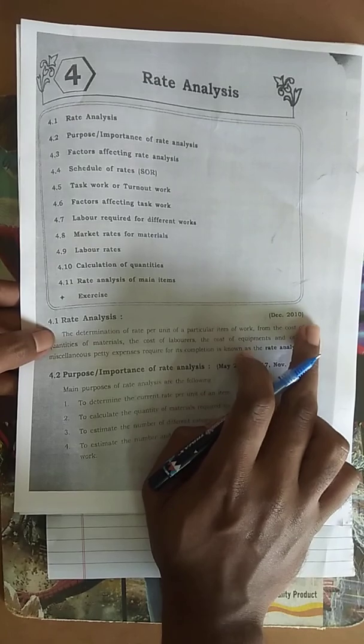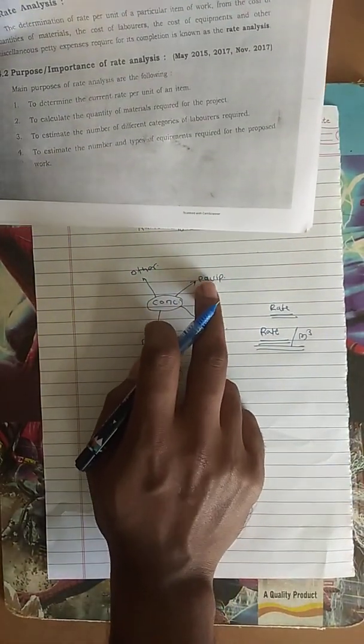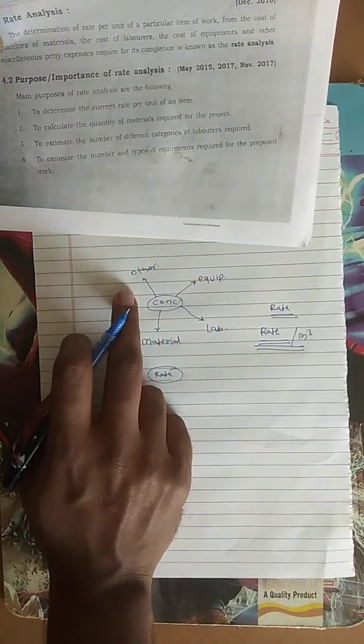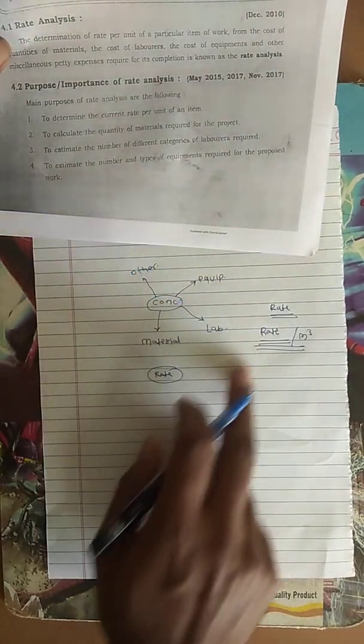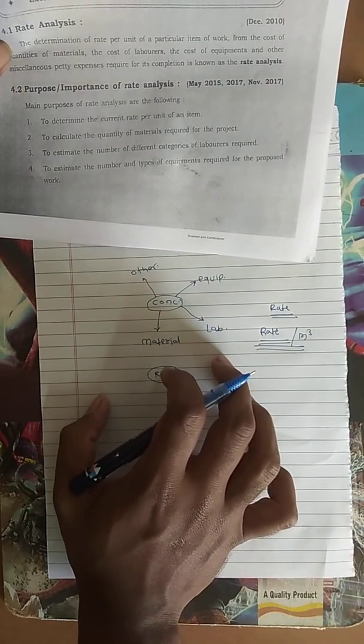Carry out the rate per unit of a particular item of work from the cost of material, cost of labor, cost of equipment, and other miscellaneous. All of these things we have to consider to prepare a rate analysis.